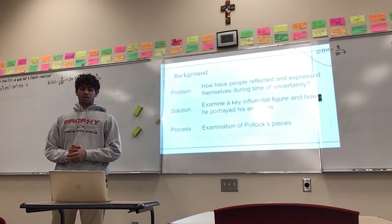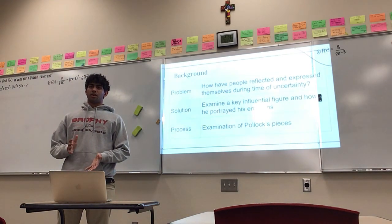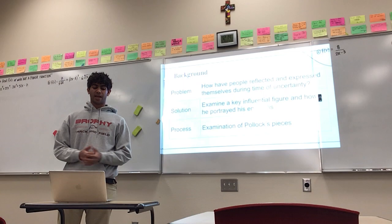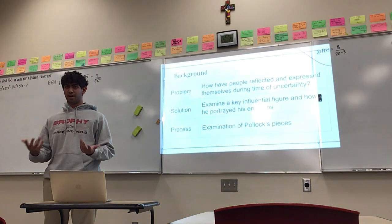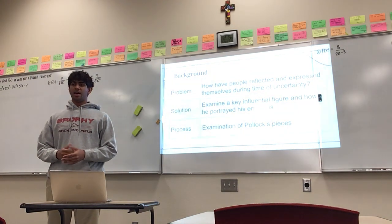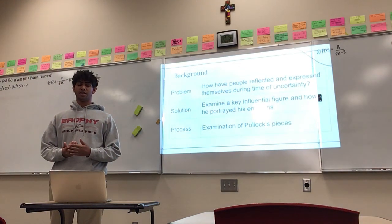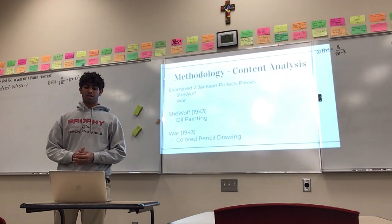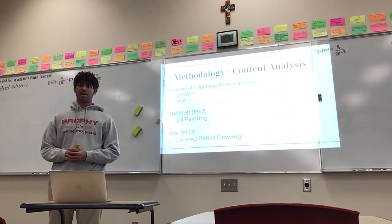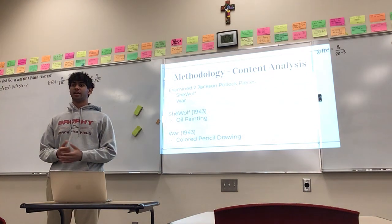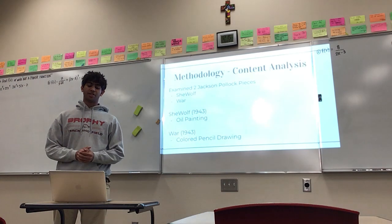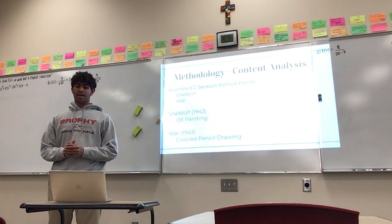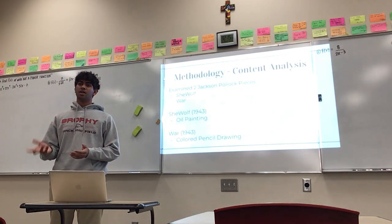My problem statement is: how have people reflected and expressed themselves during times of uncertainty? I'm going to look at this by examining Jackson Pollock as a key influential figure and how he portrayed his emotions. I conducted a content analysis of two pieces: She-Wolf and War. She-Wolf is an oil painting from 1943 that displays the narrative of Romulus and Remus, whereas War is a colored pencil drawing that quite literally depicts war. I chose both because War is most associated with World War II and how Pollock felt, and I wanted to see if She-Wolf could relate back to War.